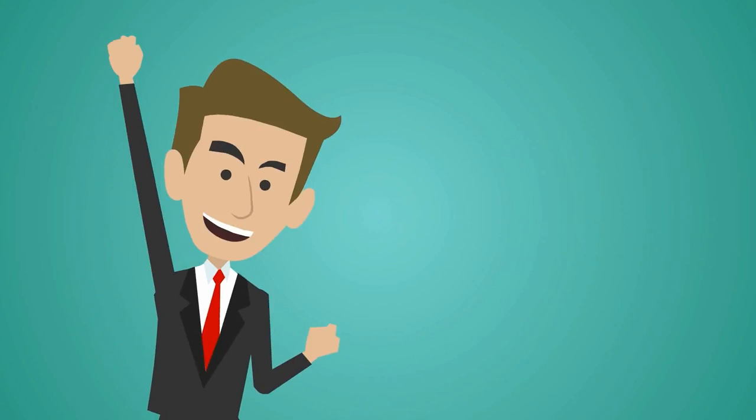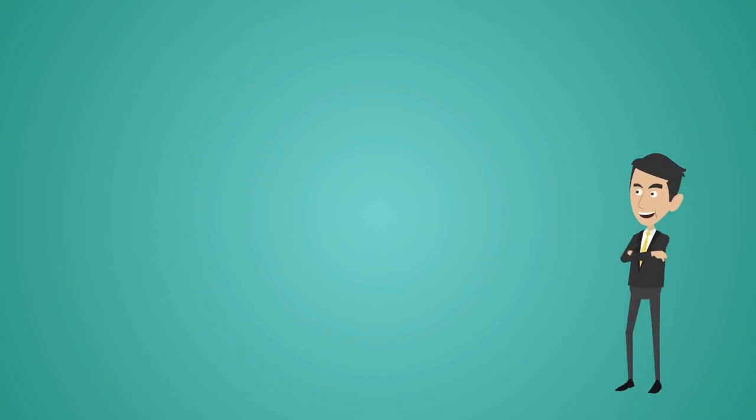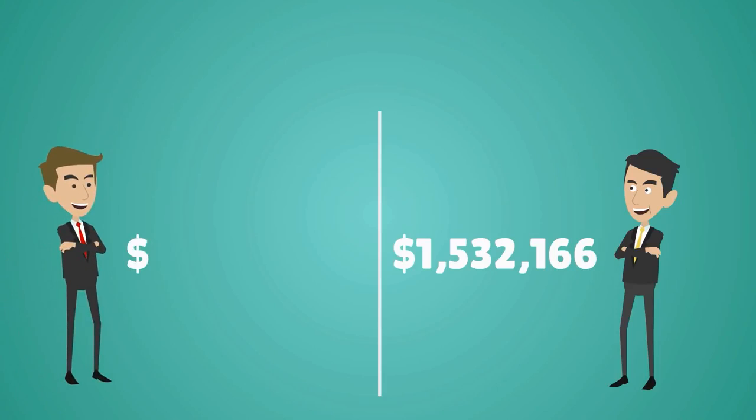Believe it or not, James came out ahead. $700,000 ahead. Tom had a total of $1,532,166, while James had a total of $2,288,996.